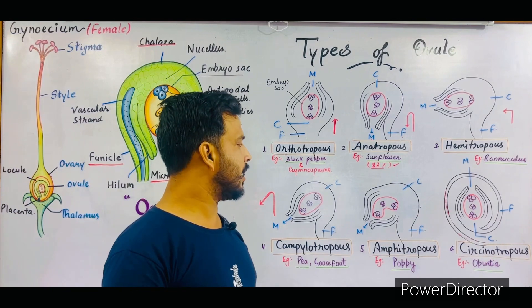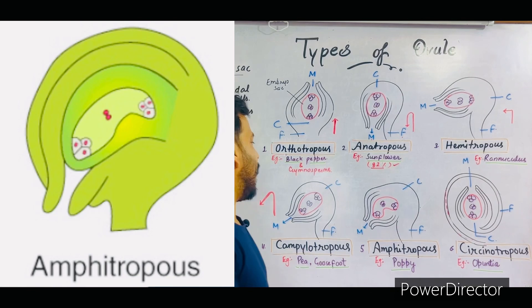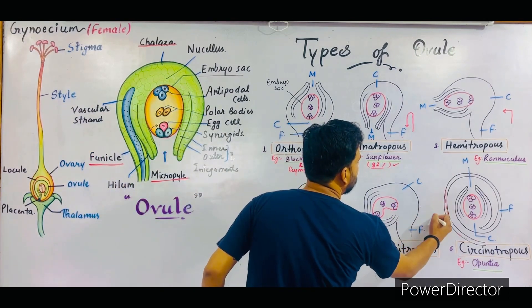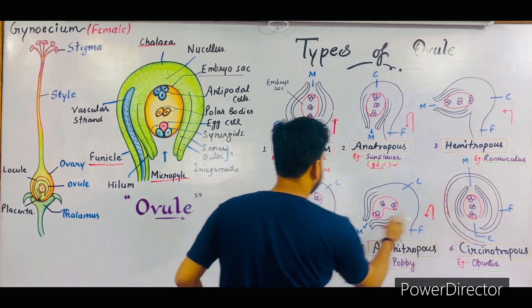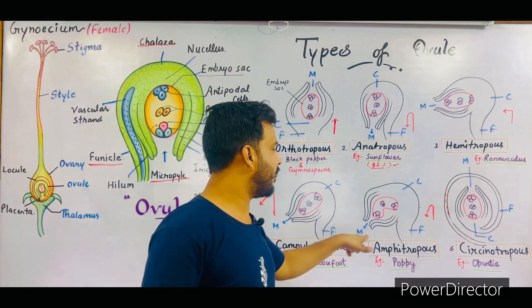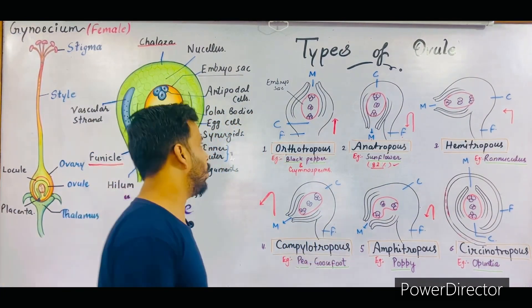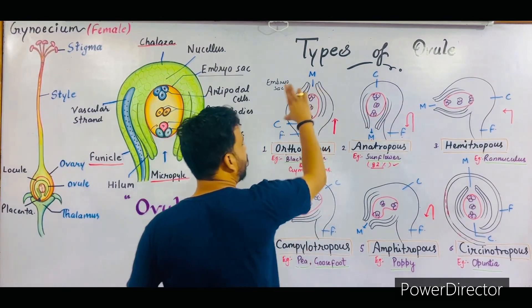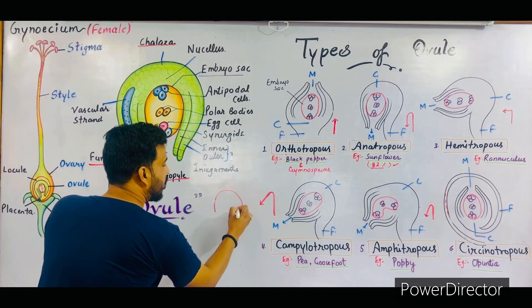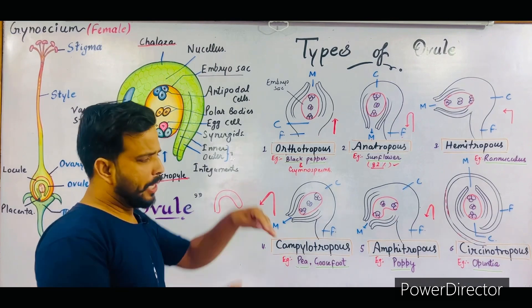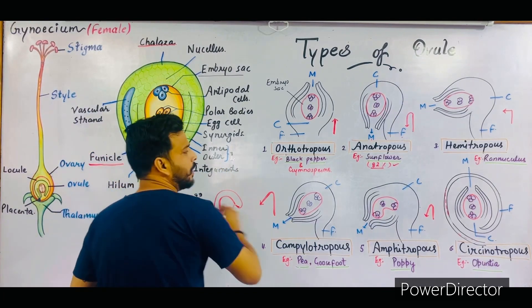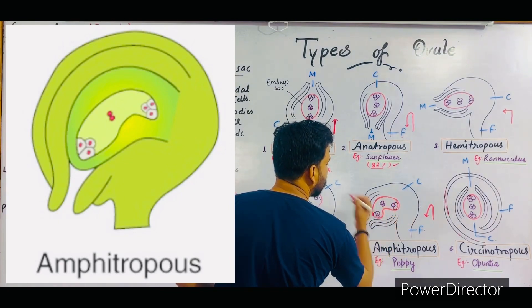The next type is amphitropous ovule, and the example is poppy. This ovule is more curved than the campylotropous ovule. Compare the two structures: campylotropous is less curved and amphitropous is more curved towards the base. Another very interesting feature of this ovule is that the embryo sac — which in all other types is circular or oval — is not circular here. Instead, its shape resembles a horseshoe. On the base of a horse's shoe, iron structures are attached which are known as horseshoes, and the embryo sac of amphitropous ovule has this horseshoe shape.